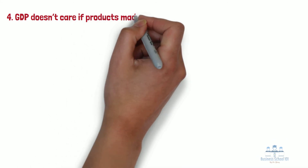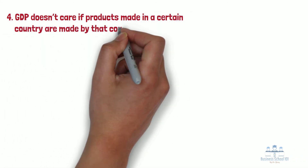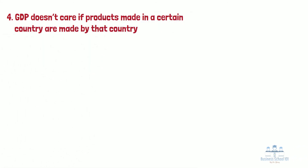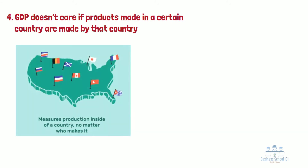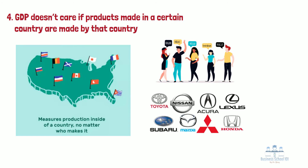Lastly, GDP doesn't care if products made in a certain country are made by that country. GDP only looks at the value of goods and services produced within a country's borders. It does not care whether or not those values are created by that country's own citizens or companies. For example, even if a country has a decent GDP, but most of the GDP is produced by foreign individuals or companies, then the GDP can't truly represent the financial standing of that country's own citizens or businesses.